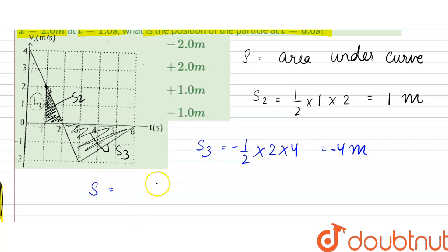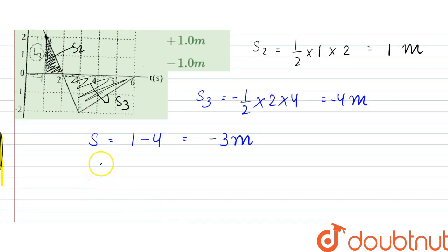So if it is at 2 meters initially, this distance would be equal to final position minus initial position, that would be equal to minus 3 meters.